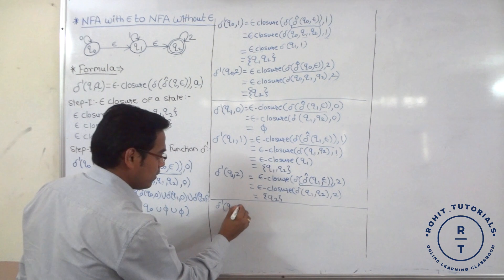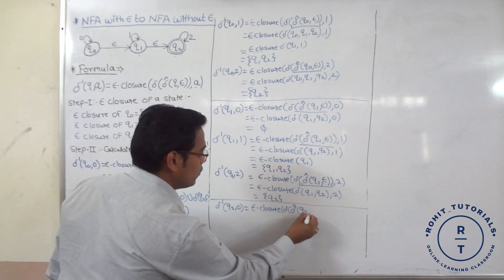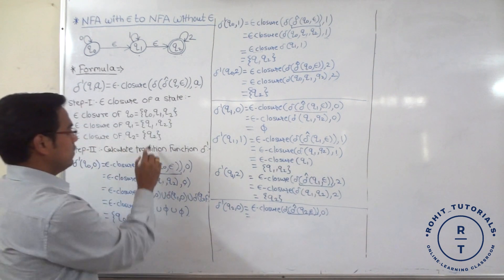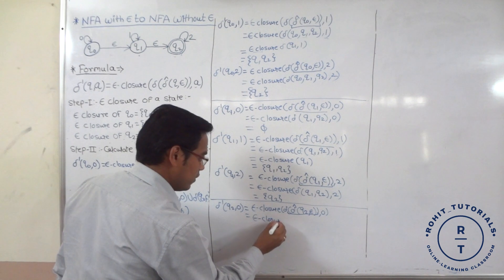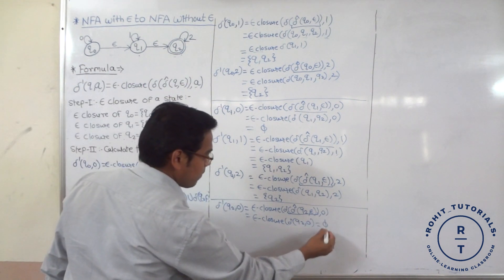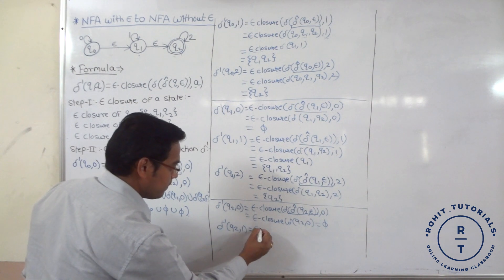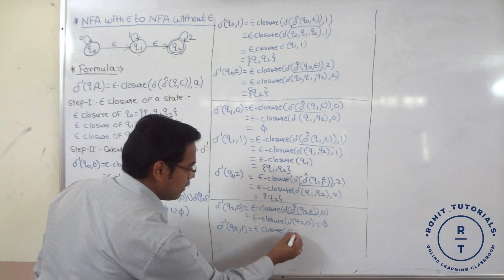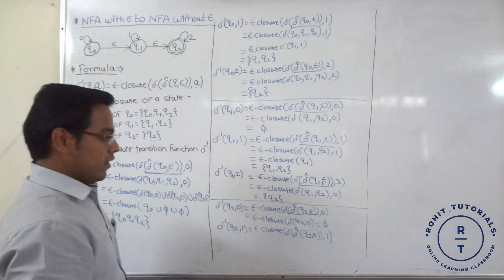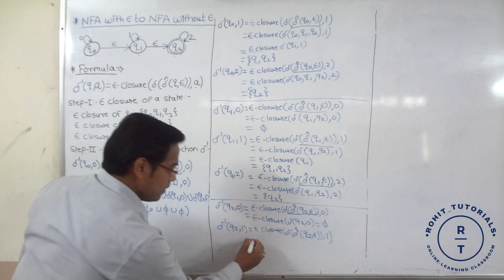Now transition for Q2 with input 0: epsilon closure of delta cap of Q2 with epsilon, input 0. Epsilon closure of Q2 is {Q2}. Transition function Q2 with input 0 gives Q2. Next, transition function Q2 with input 1: epsilon closure of delta cap of Q2 with epsilon, input 1. Q2 with input 1 has no transition, so that is phi.